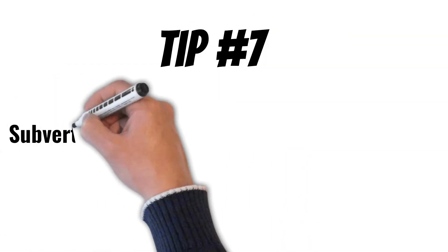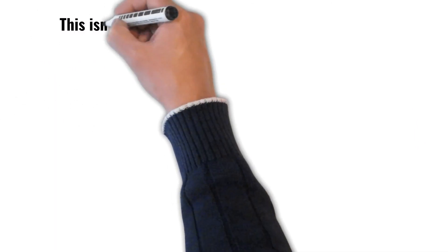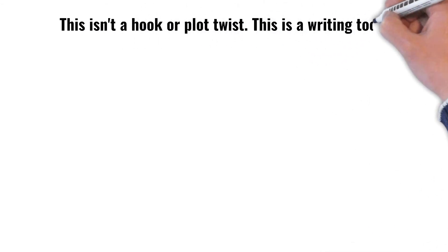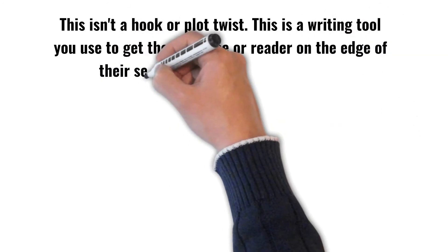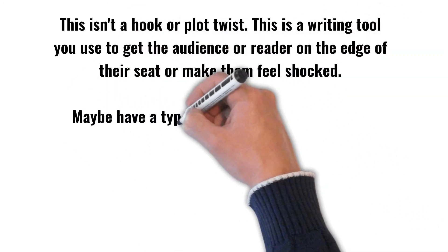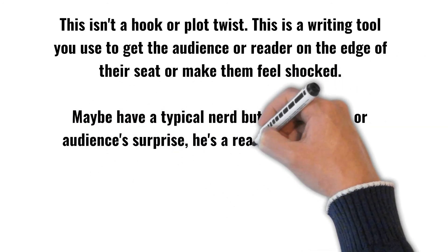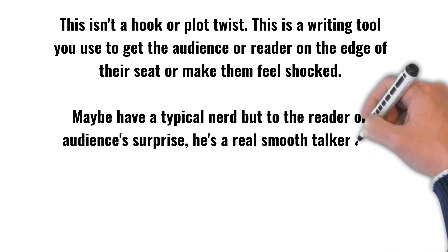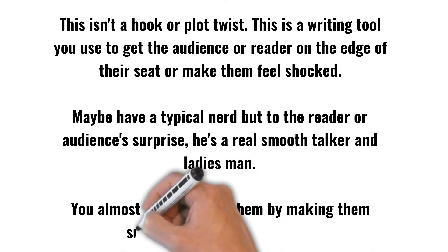Tip number 7: subvert the audience's or reader's expectations. This isn't a hook or a plot twist — this is a writing tool that you use to get the audience or the reader on the edge of their seat or make them feel shocked. Maybe have a typical nerd, but to the reader or audience's surprise, he's a real smooth talker and ladies man. You almost want to trick them by making them surprised, horrified, or joyful.